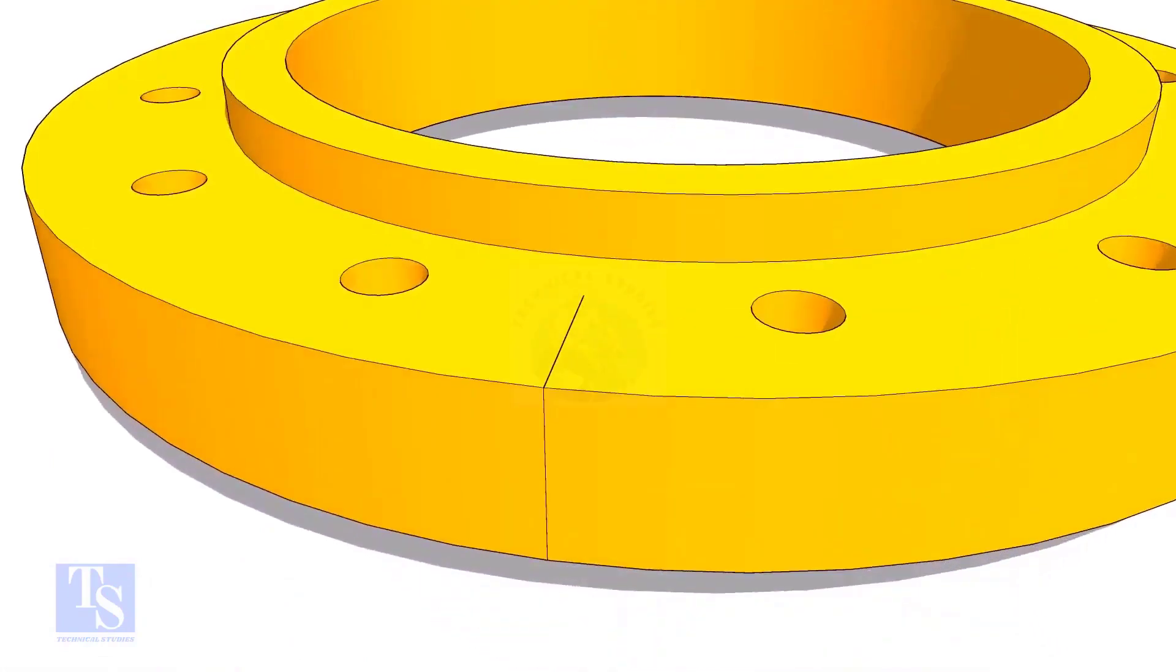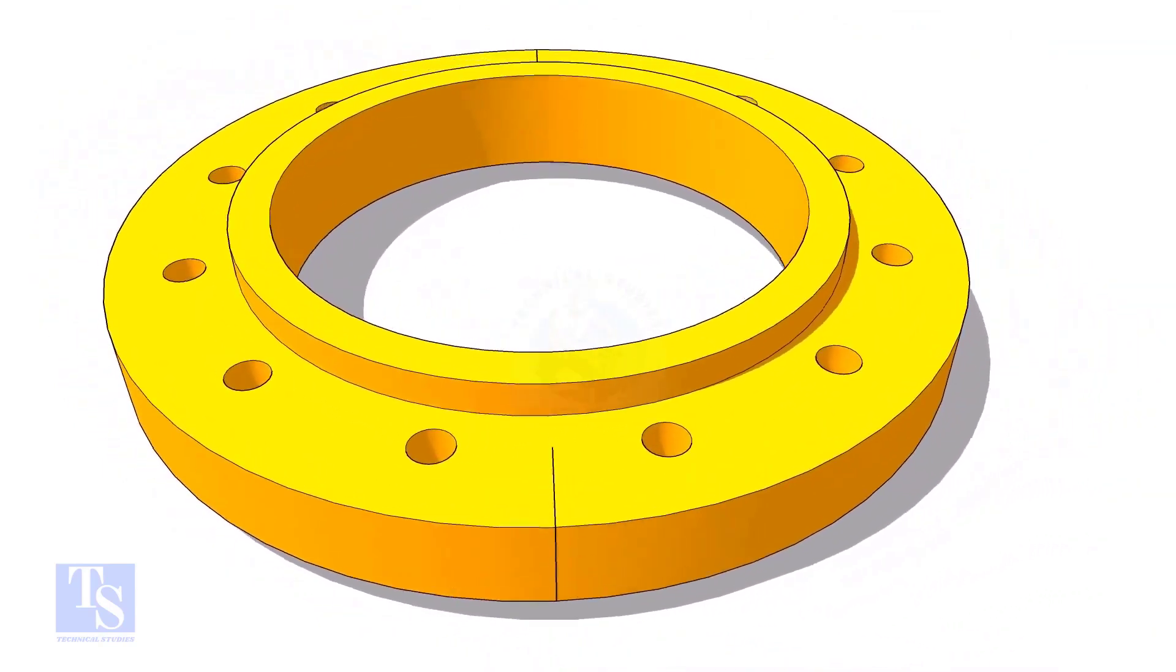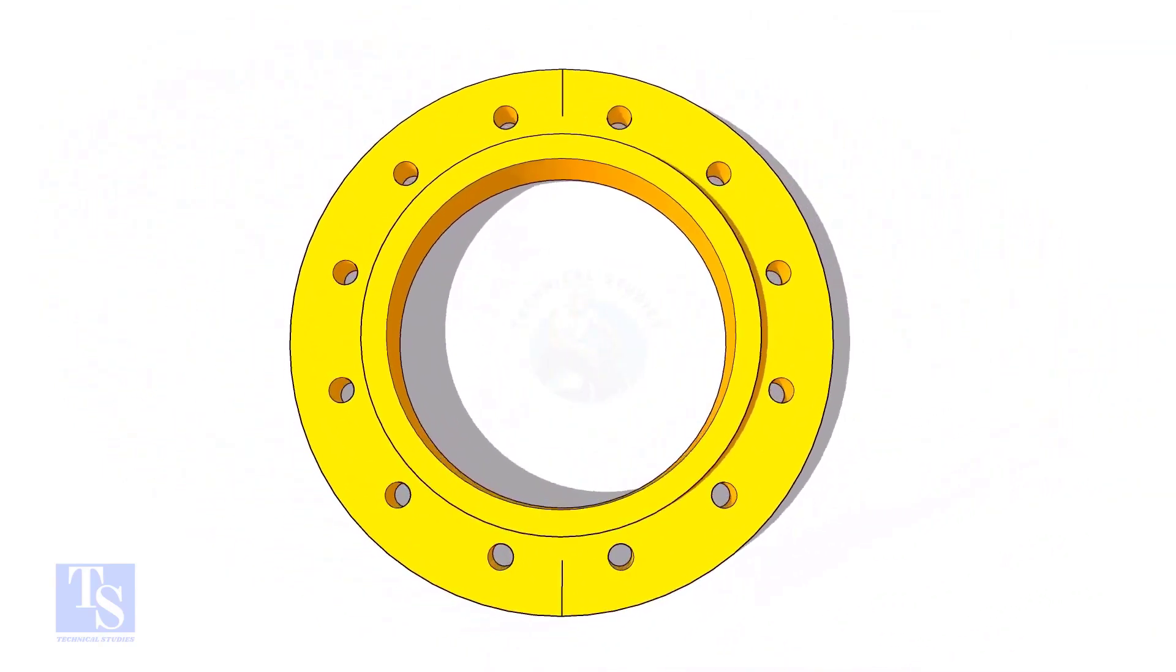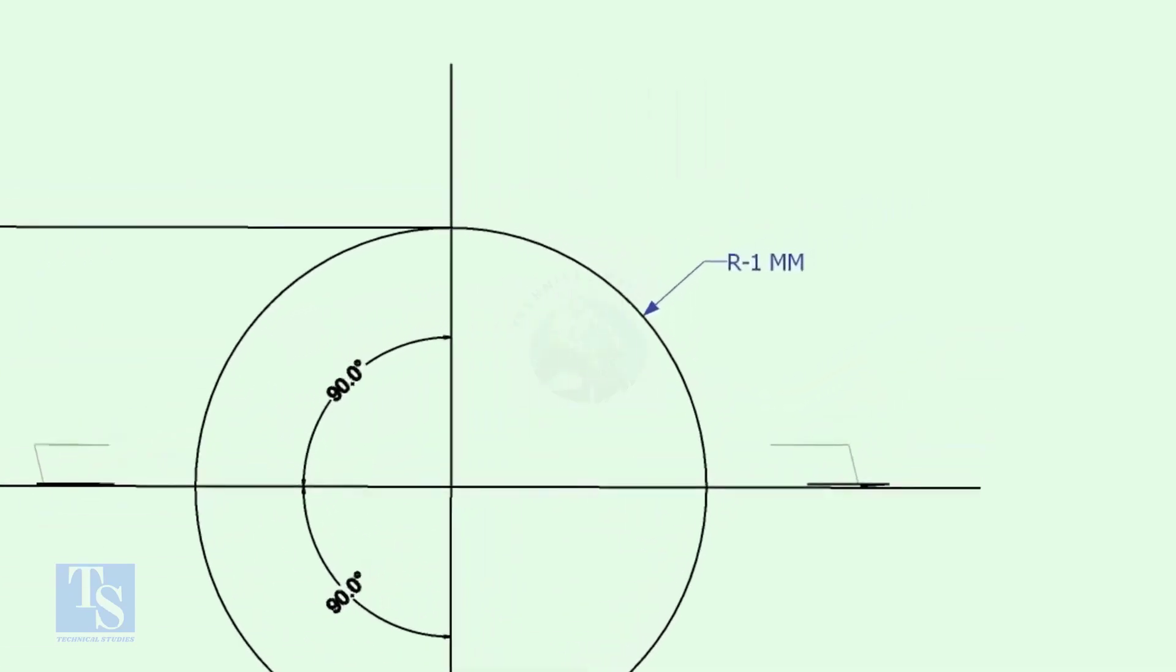Draw the centerline of the flange. On a clean plate, draw the ID of the flange. The circle diameter shall be 2mm less than the ID so that you can see the circle through the flange.